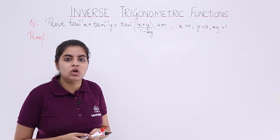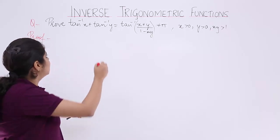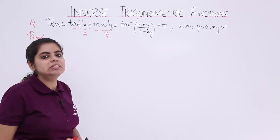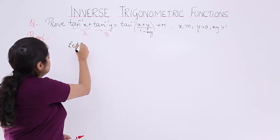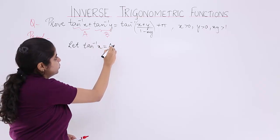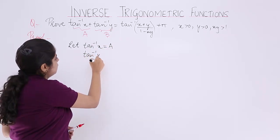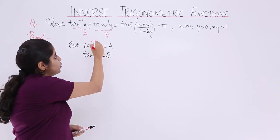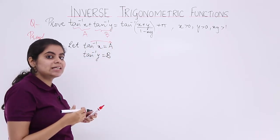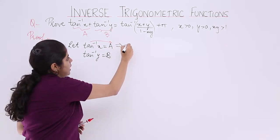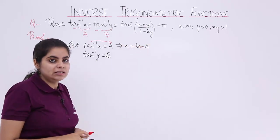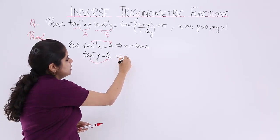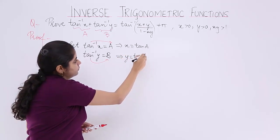Just as we did in the previous proof, we follow the same methodology at the beginning. We assume two things: let tan inverse x equal a, and let tan inverse y equal b. So x equals tan a, and similarly y equals tan b. This is as simple as that — we have already studied how to do this in the previous proof.